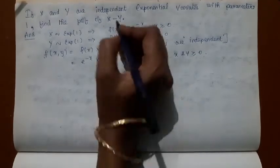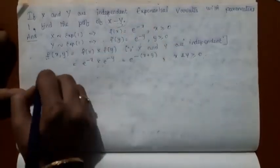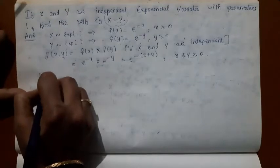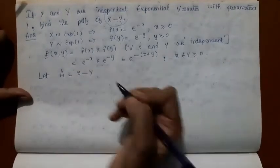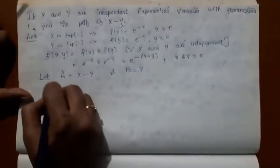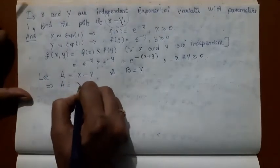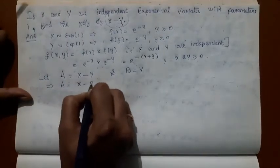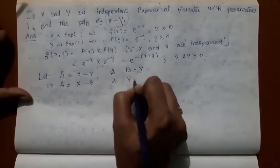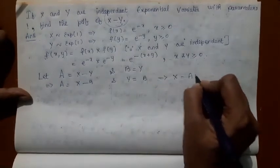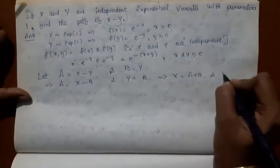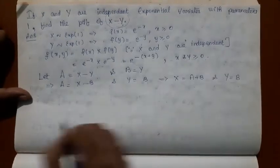Now let us consider new variables. Let A = X − Y and let B = Y. This implies A = X − B and Y = B, which implies X = A + B and Y = B.